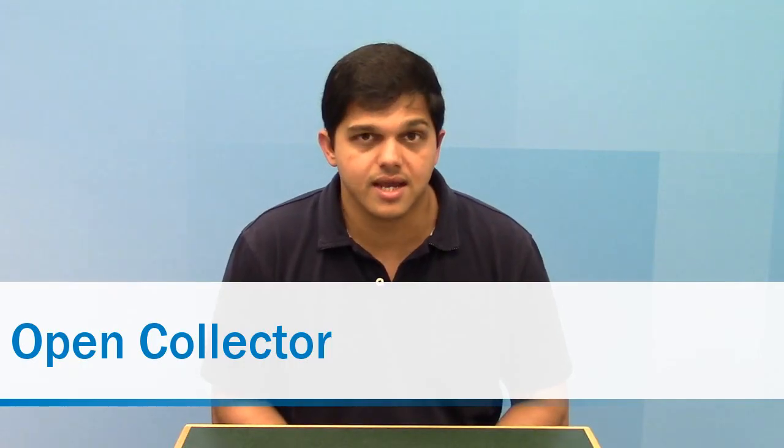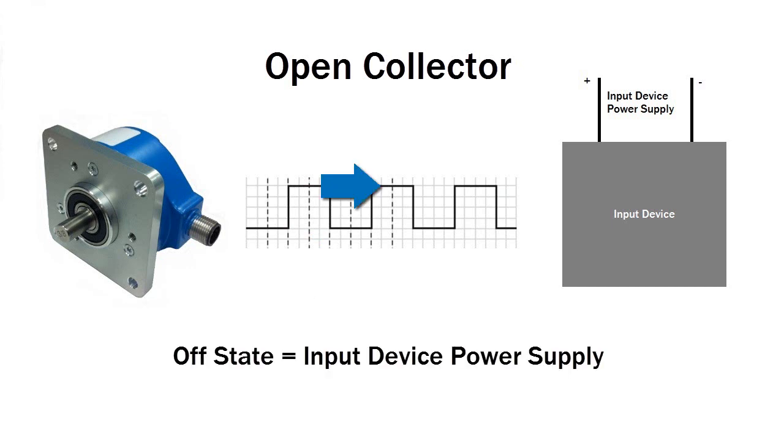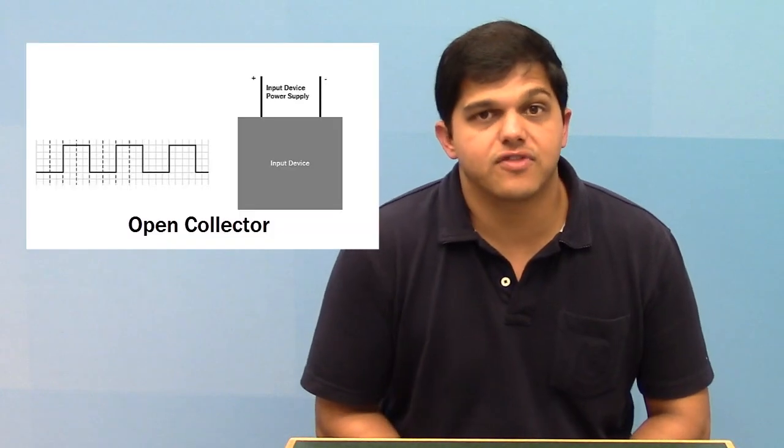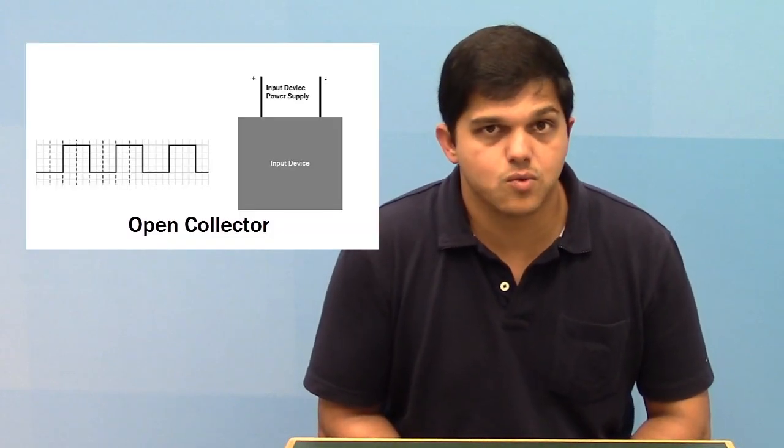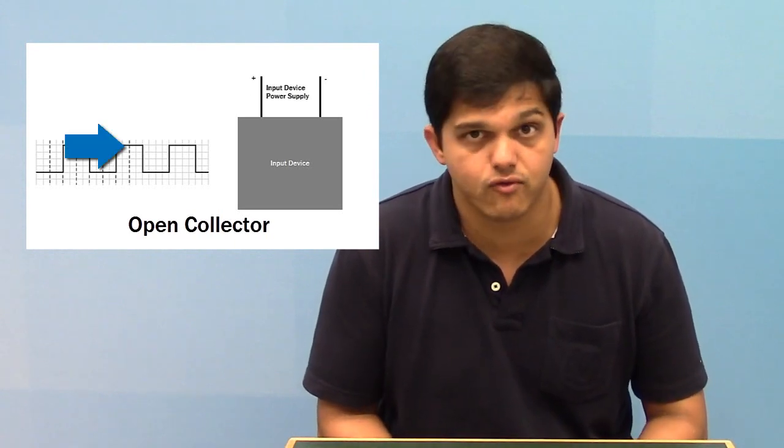Open collector is a sinking output which actively draws the output state to zero volts or the ground state, and in an off state the output is dependent on the power supply on the input side. In other words, if the output is connected to a device where the supply is 24 volts, then in the off state the output will be 24 volts.